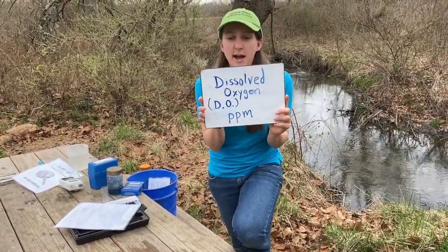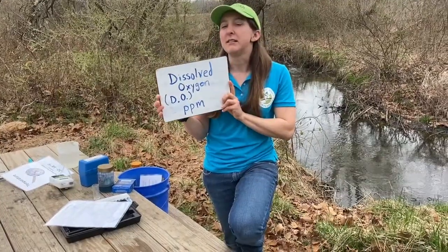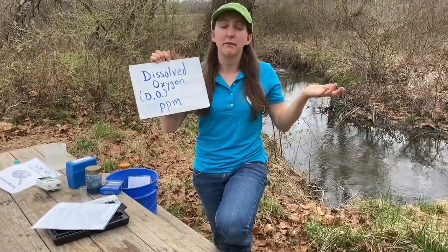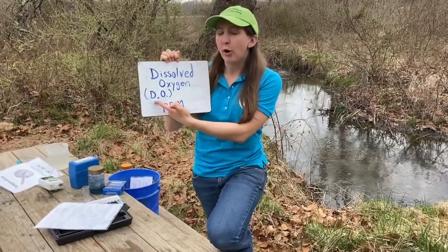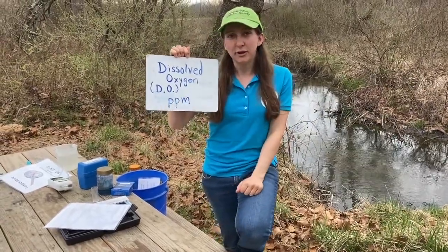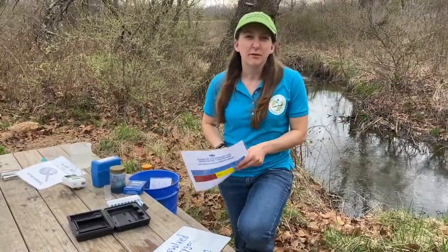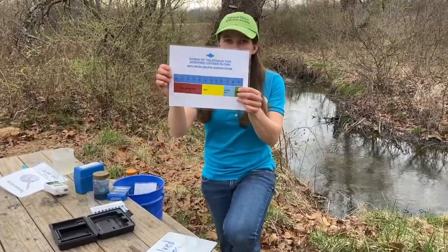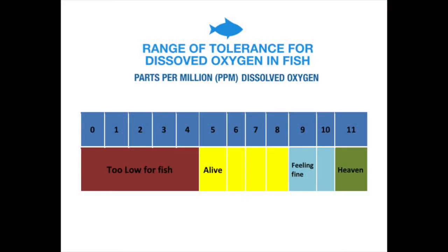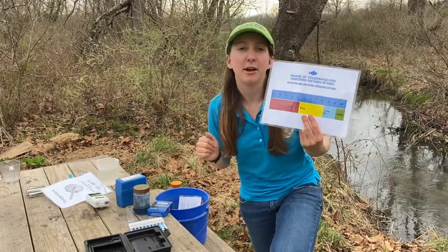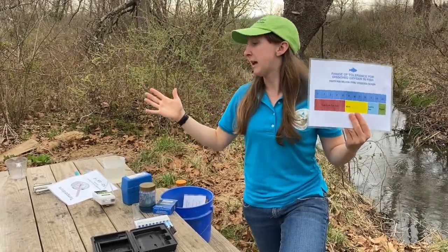Dissolved oxygen is the amount of oxygen dissolved in water — we can also call it DO — and it's measured in parts per million. Different animals in the water need different levels of dissolved oxygen. We have this nice chart here and the saying: if you have at least 5 parts per million you're alive, if you get 9 parts per million you're feeling fine, and if you've got 11 parts per million that's heaven.